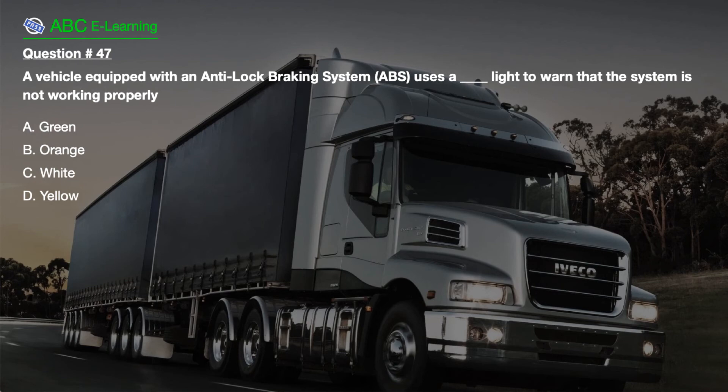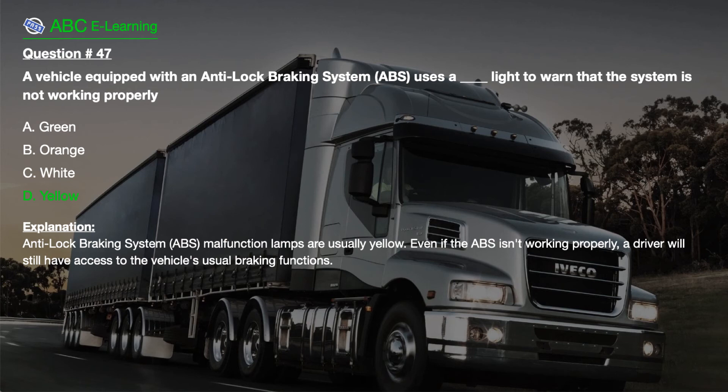Question number 47. A vehicle equipped with an anti-lock braking system (ABS) uses a light to warn that the system is not working properly. A. Green. B. Orange. C. White. D. Yellow. The correct answer is D. Yellow. Explanation: Anti-lock braking system (ABS) malfunction lamps are usually yellow. Even if the ABS isn't working properly, a driver will still have access to the vehicle's usual braking functions.